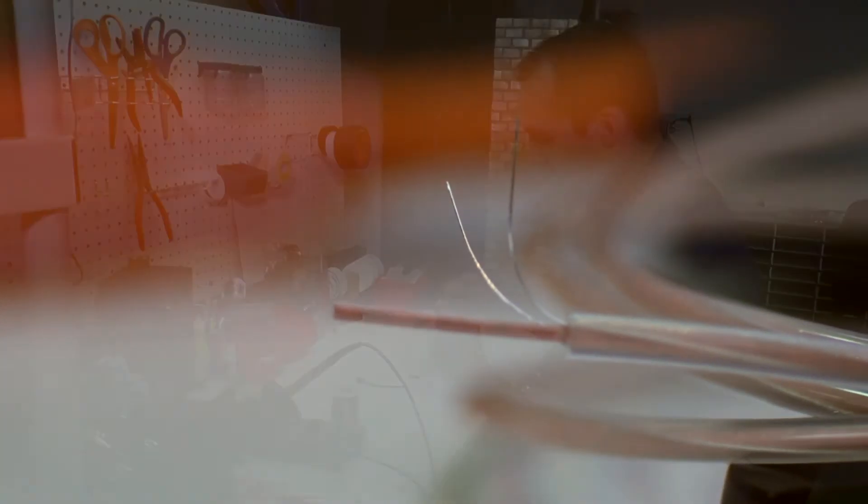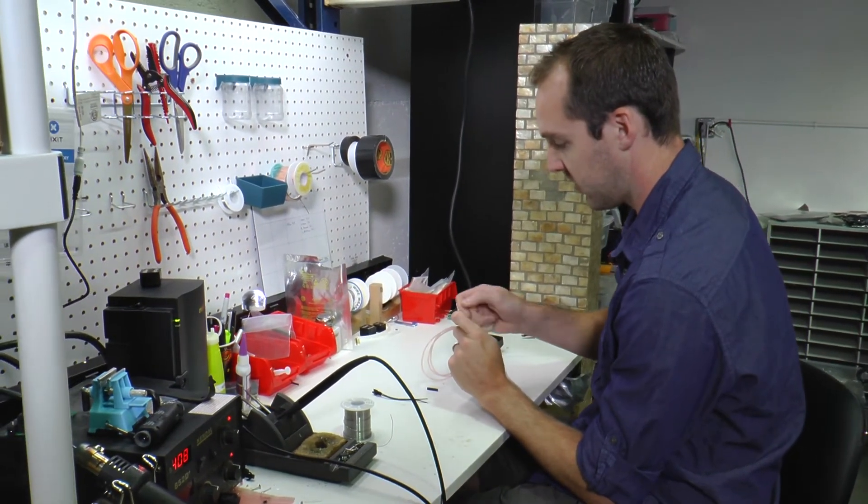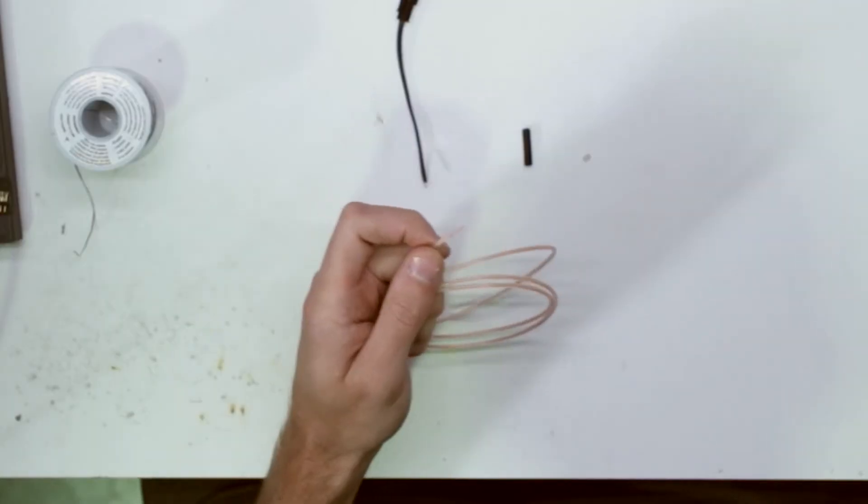Go ahead and braid those around. This will just add a little bit of extra strength to these two wires. This is your weak point so you want to make sure this is as strong as possible.